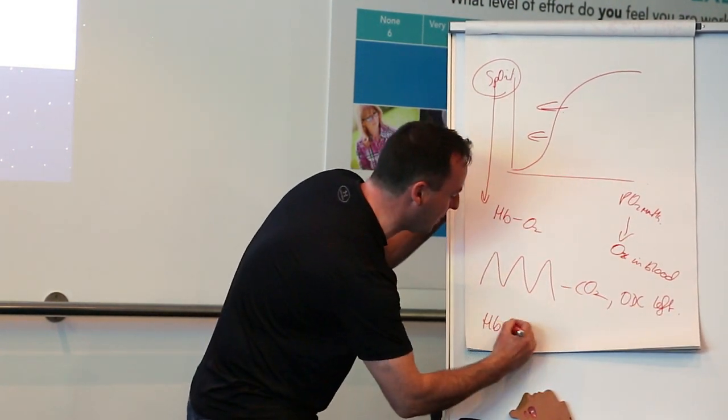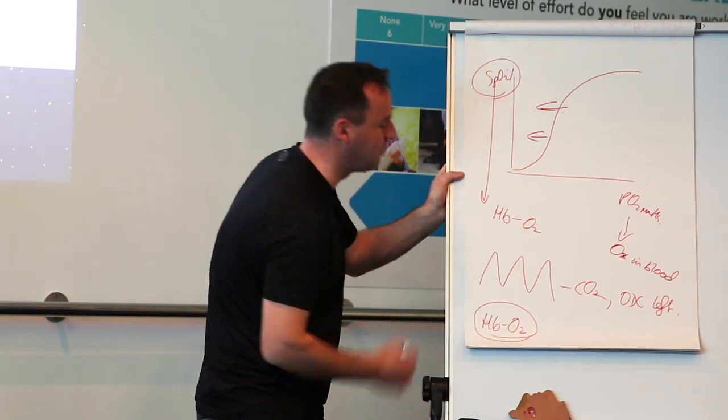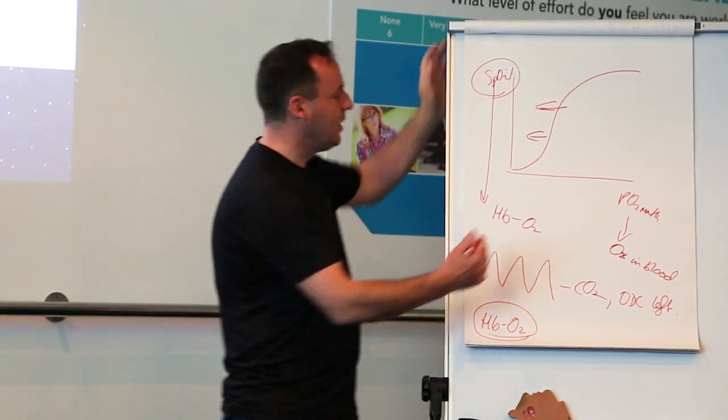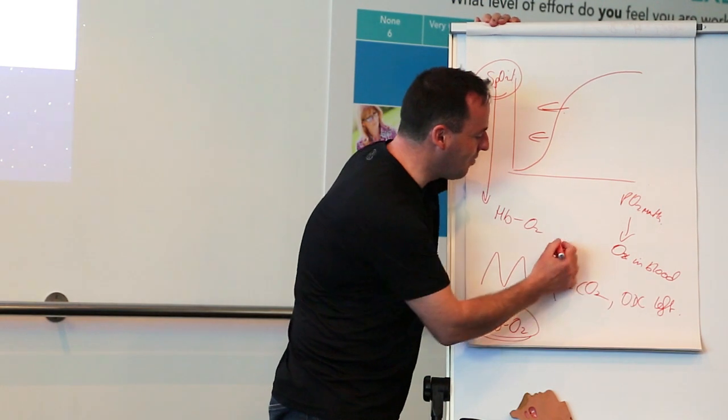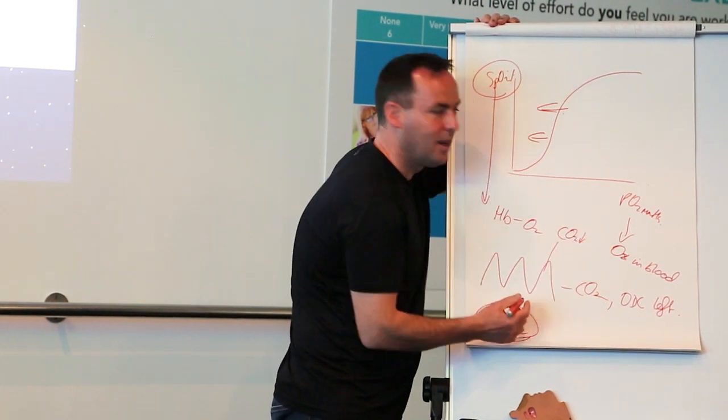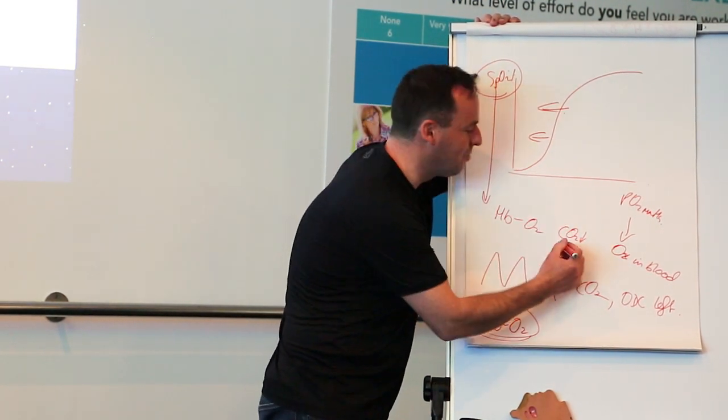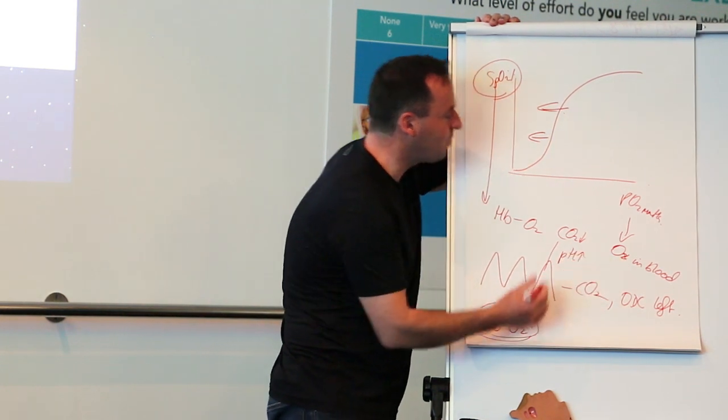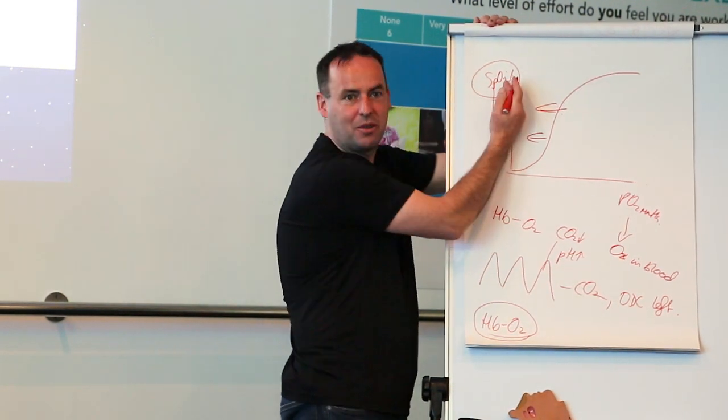Hemoglobin holds onto oxygen. So I'll just say that again. If you breathe hard, you get rid of carbon dioxide. If you get rid of carbon dioxide, blood pH increases. This causes the curve to shift to the left.